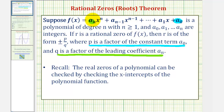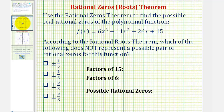Going back to our example, we'll begin by listing all the factors of the constant term 15, and then we'll list all the factors of the leading coefficient 6, and then we'll find the unique rational numbers that we can form, giving us our possible rational zeros.